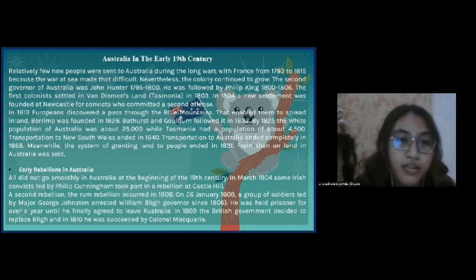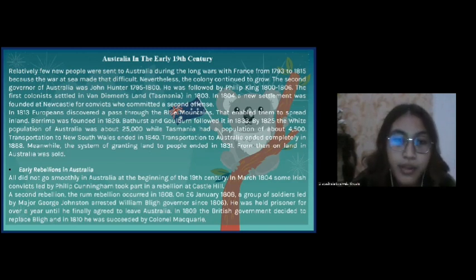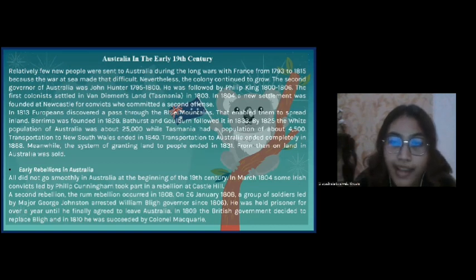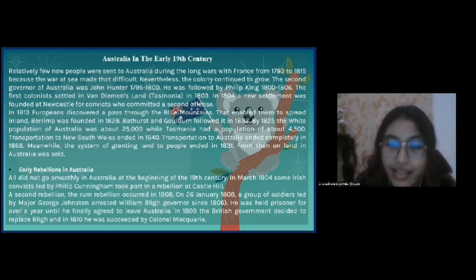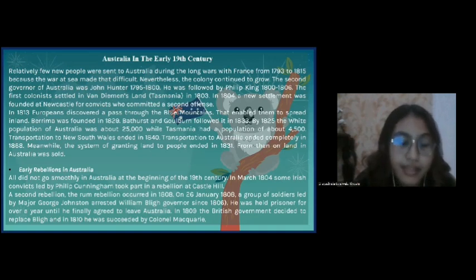Early unrest in Australia. All did not go smoothly in Australia at the beginning of the 19th century. In March 1804, some Irish convicts led by Philip Cunningham took part in a rebellion at Castle Hill. A second rebellion, the Rum Rebellion, occurred on 26 January 1808. A group of soldiers led by Major George Johnston arrested William Bligh, governor since 1806, who was held prisoner for over a year until he finally agreed to leave Australia. In 1809, the British government decided to replace Bligh, and in 1810 he was succeeded by Colonel Macquarie.